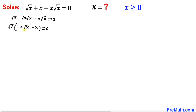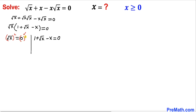Now since we have two factors equal to zero, let's separate them. We can write square root of x equal to zero, or the second factor equal to zero. Focusing on the first equation, we square both sides — the square and square root undo each other — so we get x equal to zero. That is one of our solutions.